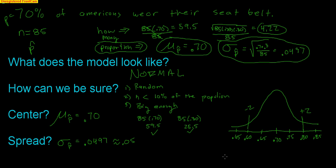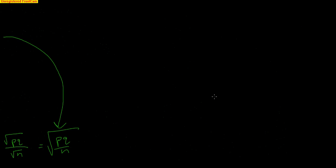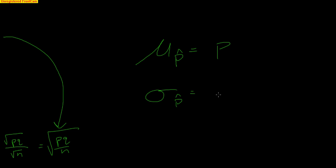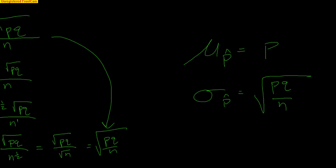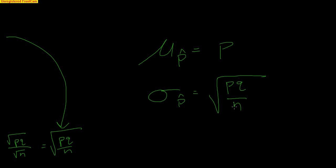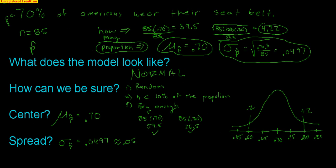This is the idea of a sampling distribution for a proportion. The questions you have to ask yourself: What model is it? It's normal. How do I know? The three conditions we discussed. What's the center? Make sure you use proper notation. What's the standard deviation or spread? The center of a sampling distribution for a proportion is the truth — always. And the standard deviation is the square root of pq divided by n. Those two formulas create the center and spread of your sampling distribution.